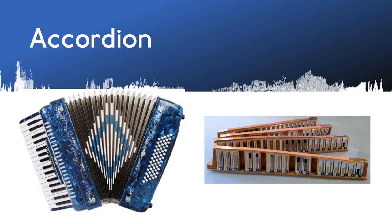There are some woodwind instruments that you don't actually blow into, but still use air and a reed to make their sound. On the right here you can see the reeds that are inside an accordion — there are actually several different reeds for each note. Instead of blowing into it, the air is moved across the reeds by pushing and pulling. The concertina part of the instrument is called the bellows.